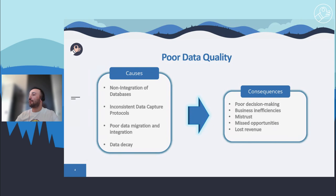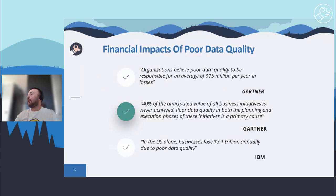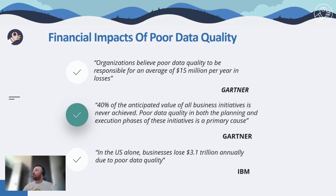And the last consequence is lost revenue. Poor quality data can lead to lost revenue in many ways — for example, communications that fail to convert to sales because the underlying customer data is incorrect. According to Gartner, organizations believe they lose an average of $15 million per year due to poor data quality, and 40% of anticipated value of all business initiatives is never achieved as a result of poor data quality. IBM research reveals that businesses lose $3.1 trillion annually in the US alone.